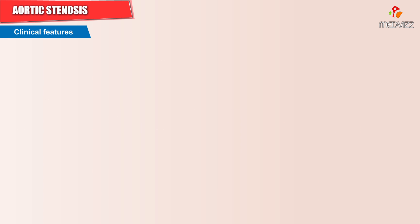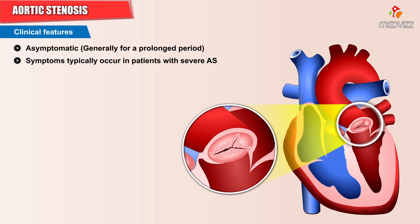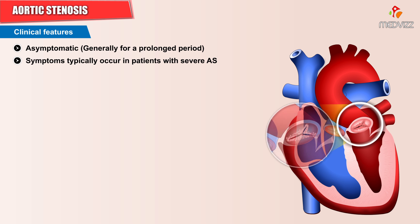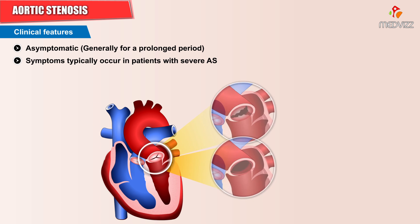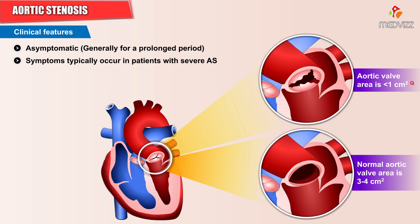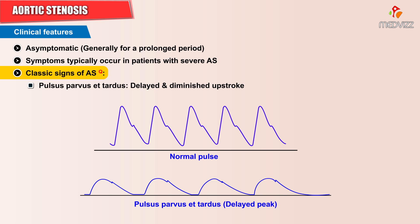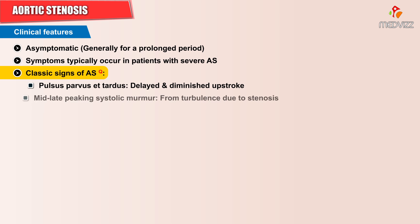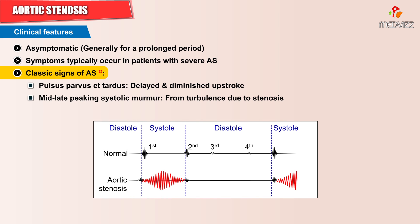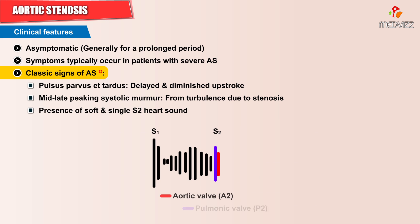Patients with aortic stenosis are asymptomatic for a prolonged period of time, and symptoms typically occur only in patients with severe aortic stenosis, where the aortic valve area has become less than one centimeter square. Pulsus parvus et tardus, a delayed and diminished upstroke, a late-peaking systolic murmur from turbulence due to the stenosis, and the presence of a soft and single second heart sound are the classic signs of severe aortic stenosis.